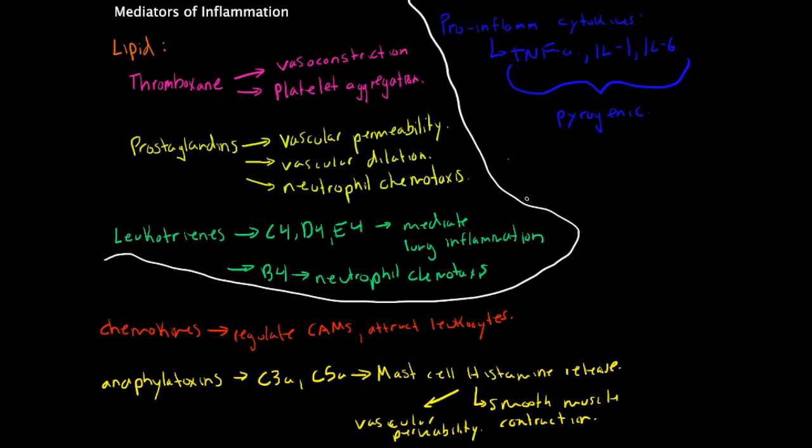All three of them also synthesize acute phase proteins in the liver. All three of them increase vascular permeability. Interleukin-1 and tumor necrosis factor increase adhesion molecules on the vascular endothelium. And then interleukin-1 and tumor necrosis factor increase fibroblast proliferation.